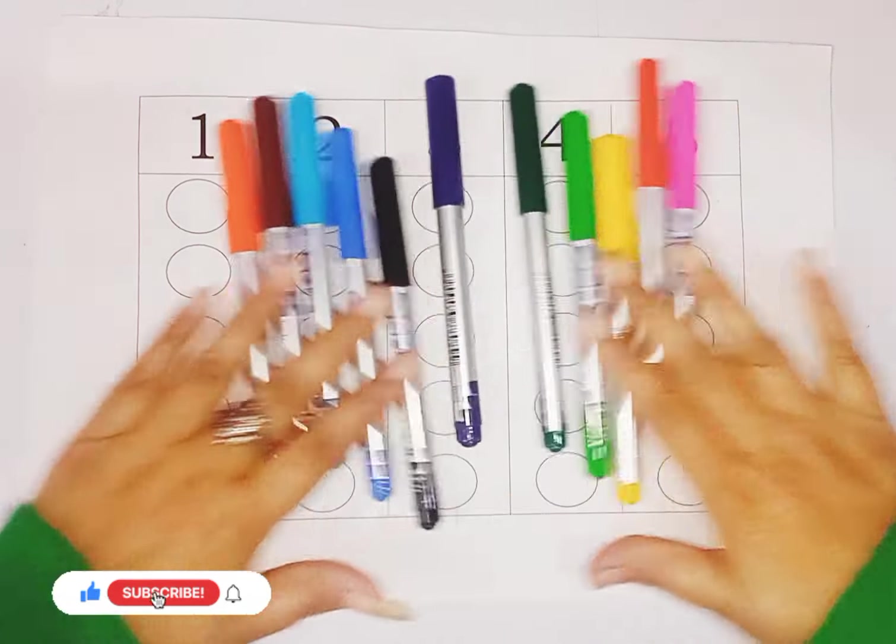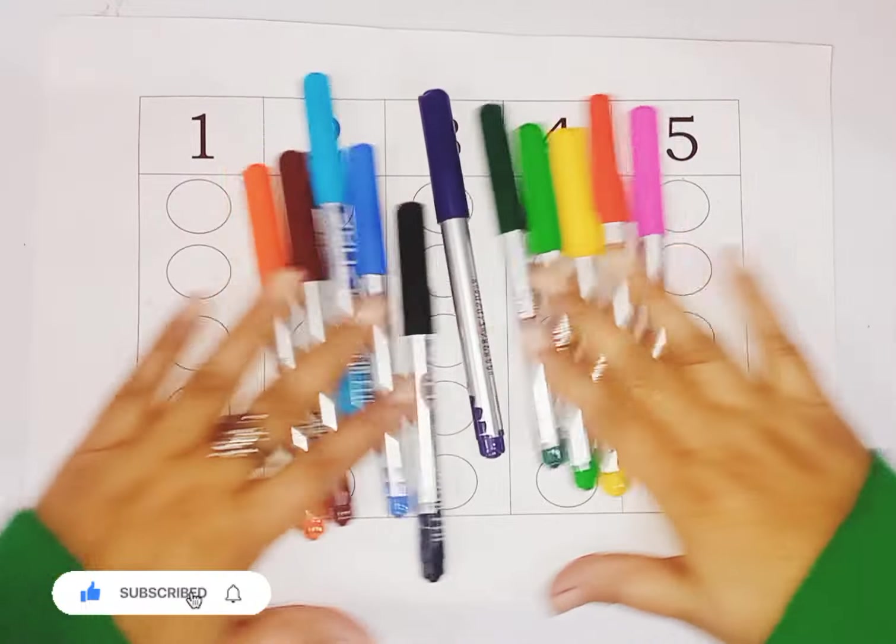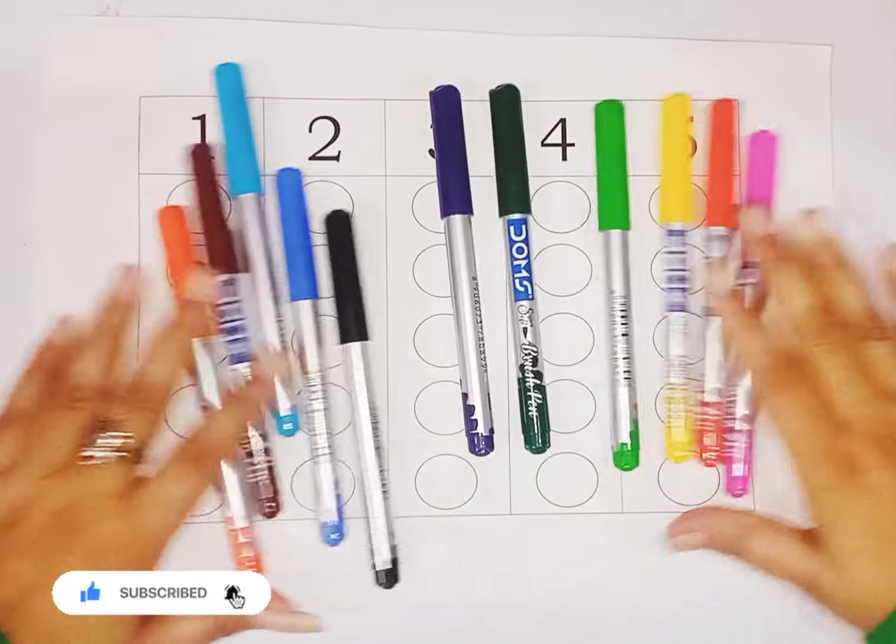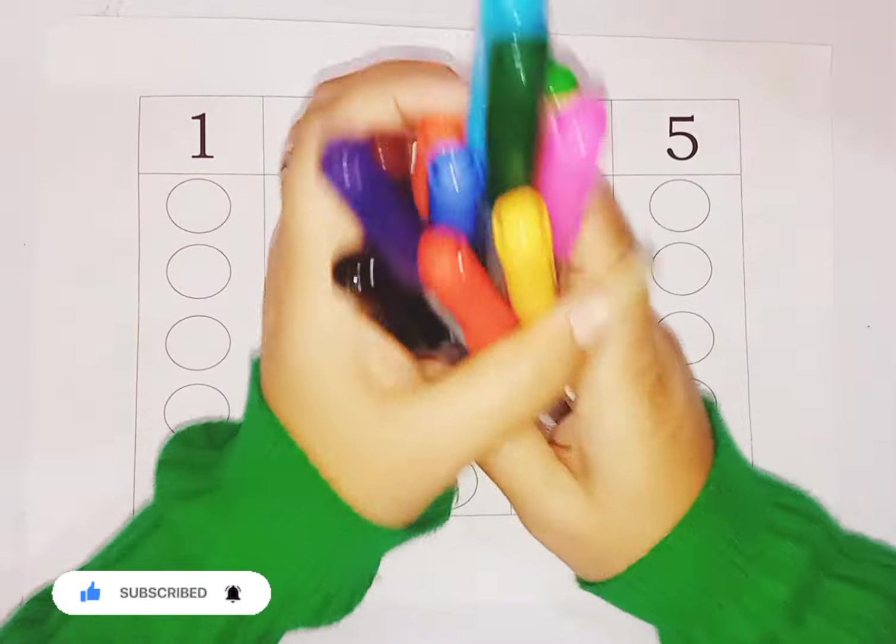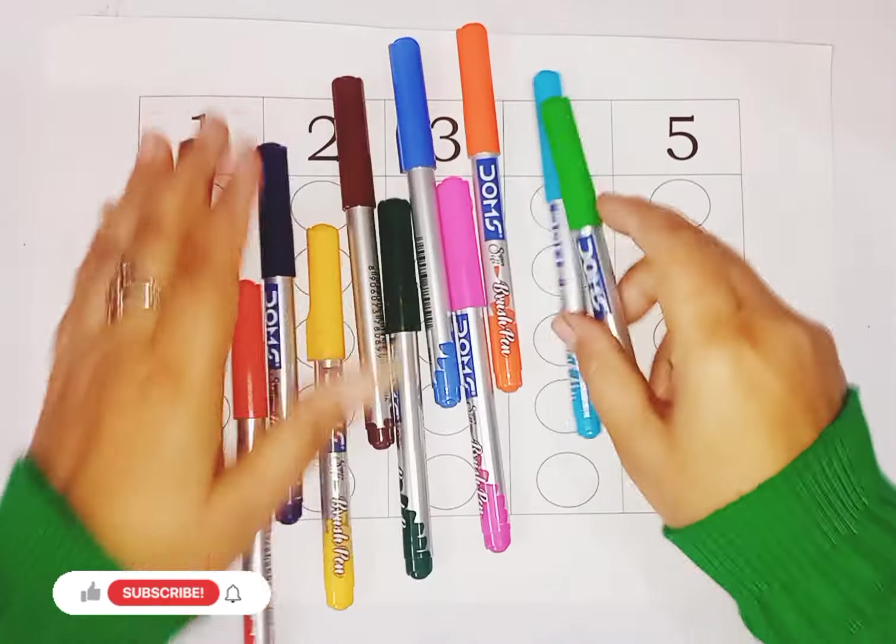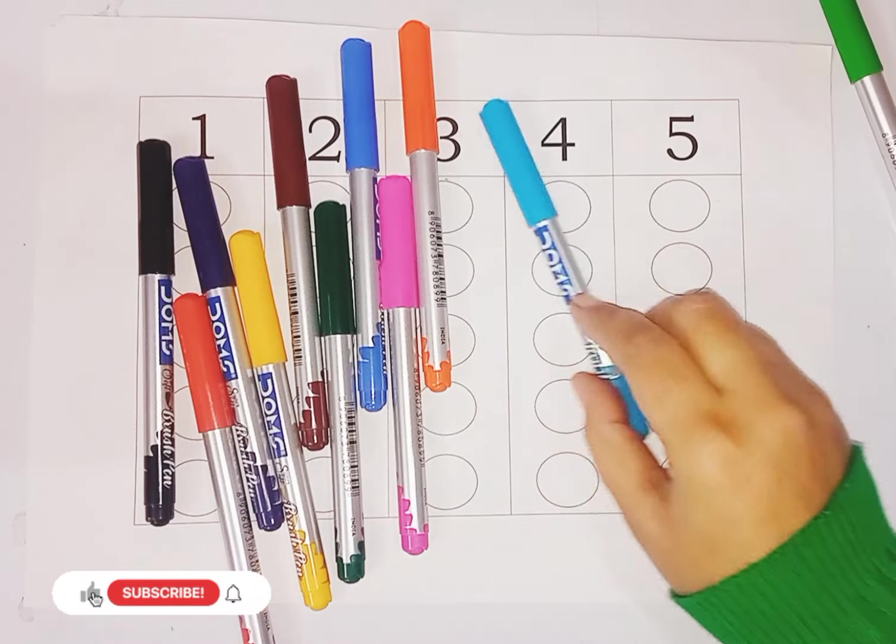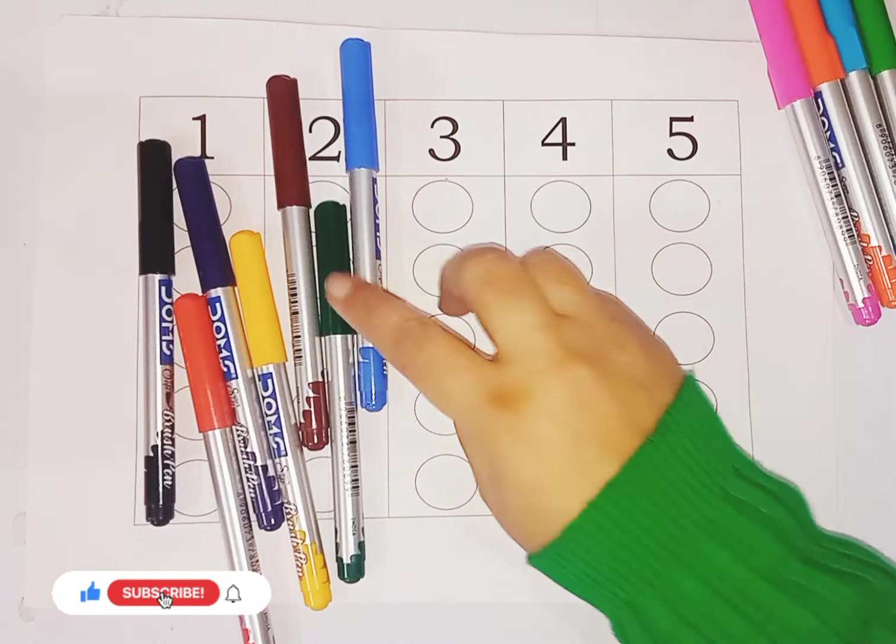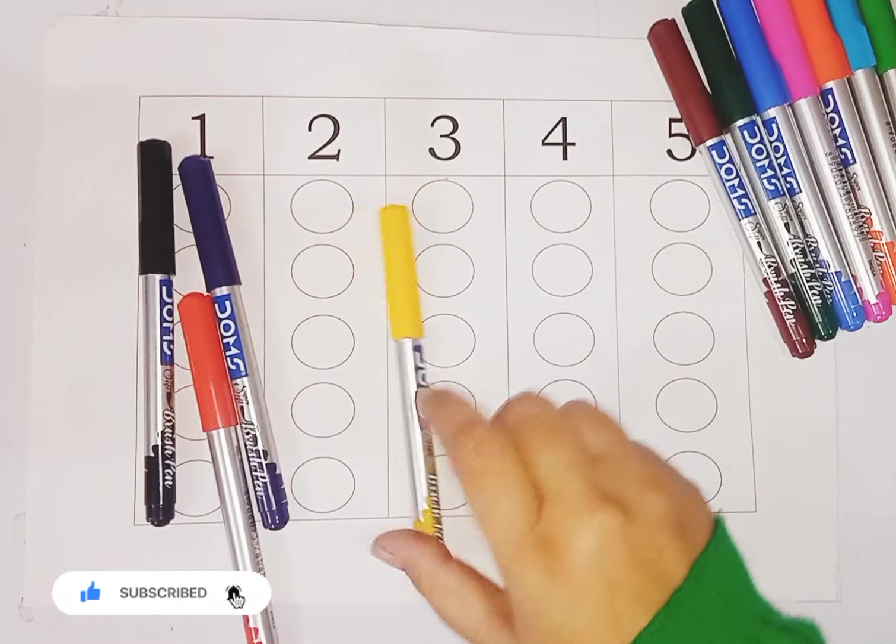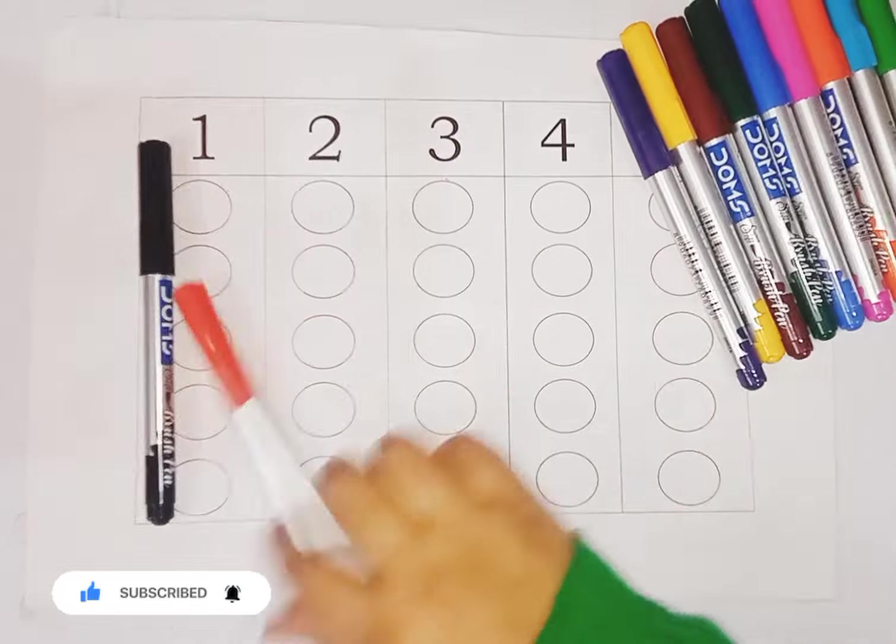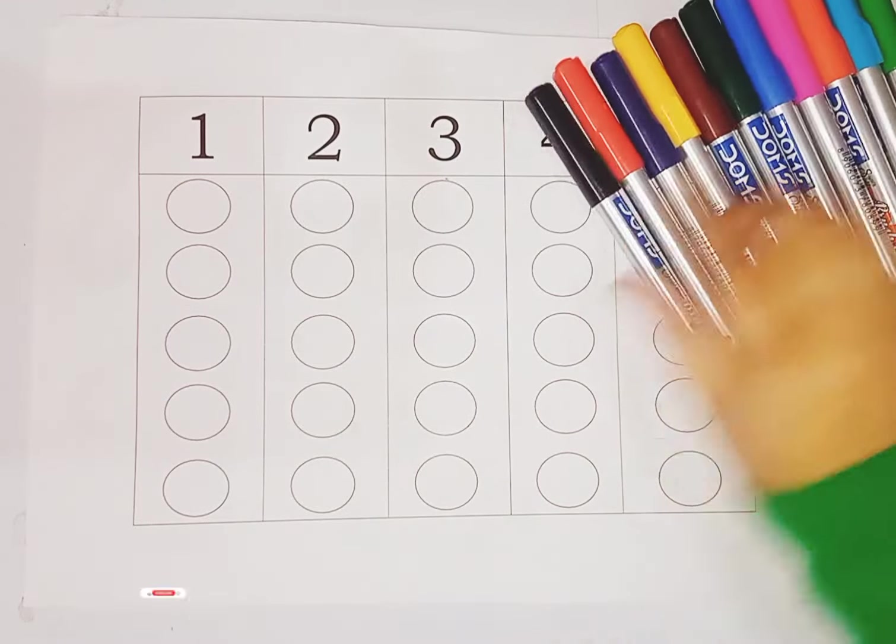These are colors. What is this kids? These are colors. Let's learn some color names. Light green color, sky blue color, orange color, pink color, blue color, dark green color, brown color, yellow color, violet color, red color, black color.